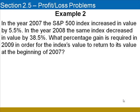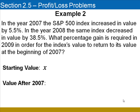In the first example, we knew the starting value of the stock. In this example, although we don't know the original starting value, we can still solve a similar problem. In the year 2007, the S&P 500 index increased in value by 5.5%. In the year 2008, the same index decreased in value by 38.5%. What percentage gain is required in 2009 in order for the index's value to return to its value at the beginning of 2007? The starting value is unknown, so we will let the variable X represent this value. Because the stock went up in 2007 by 5.5%, its value after 2007 is 105.5% of its original value, or 1.055X.